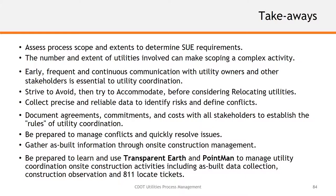Fourth takeaway: strive to avoid utilities if at all possible. If you can't avoid them, try to accommodate them — perhaps by modifying the design alignment, as with the storm drain line example. Do those two steps before considering relocation, because relocation costs time and money, creates a more complex environment for the contractor, and can be more expensive if CDOT has to perform the relocation on behalf of utility owners. Avoid first, then accommodate, then consider relocation — a great basic tenet for dealing with utilities throughout your project.